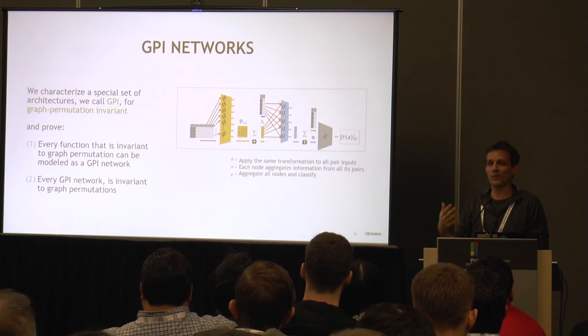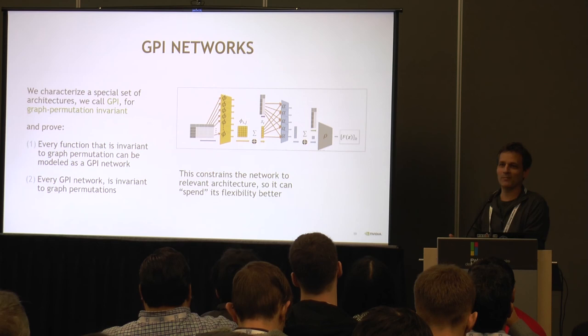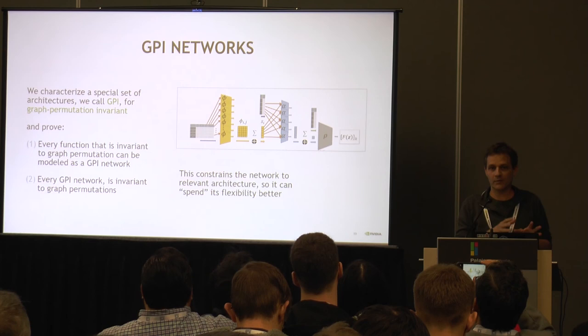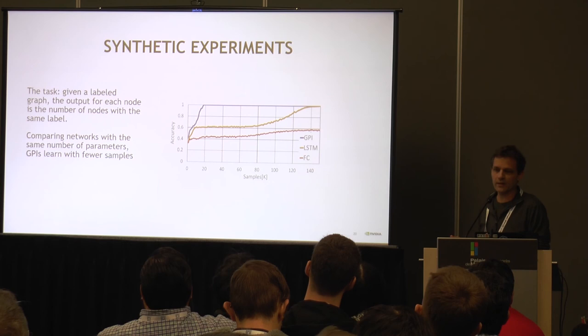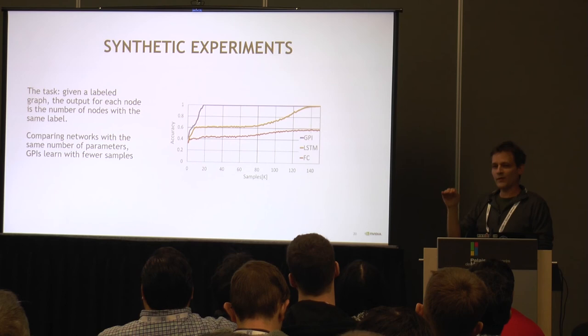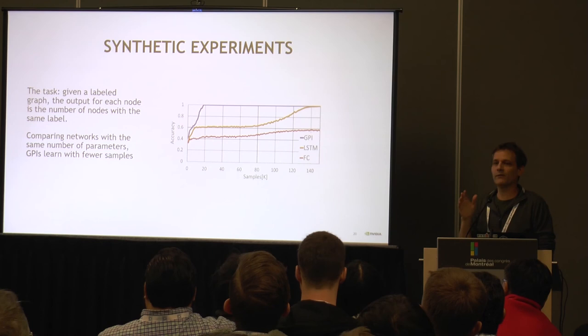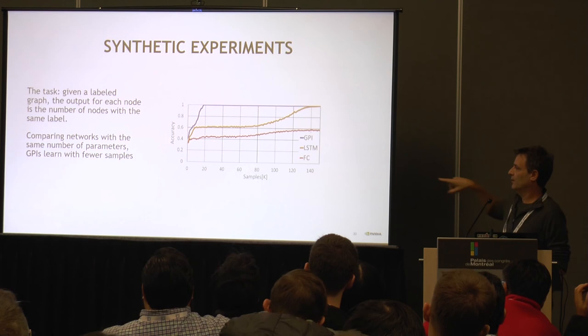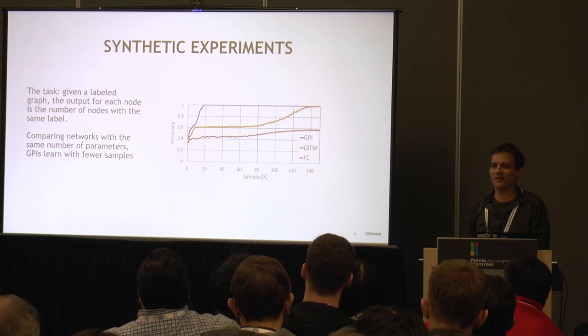Of course, if you have a lot of data and a lot of training time, you could hope that the network would learn invariances by itself from the data. But by forcing some constraints using your prior knowledge, you hope to learn with fewer samples or faster. We tested this with a small synthetic example. The task was to predict for each node how many other nodes have the same label. We compared several architectures including LSTM and fully connected, all having the same number of parameters. Showing accuracy on the y-axis and number of training samples on the x-axis, the GPI — graph permutation invariant — architecture managed to learn with fewer and fewer samples.